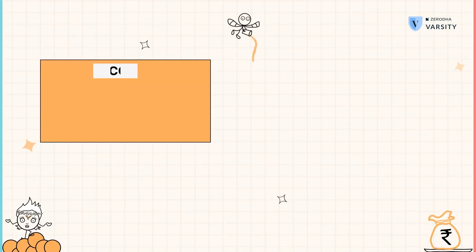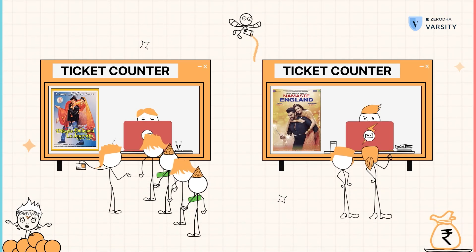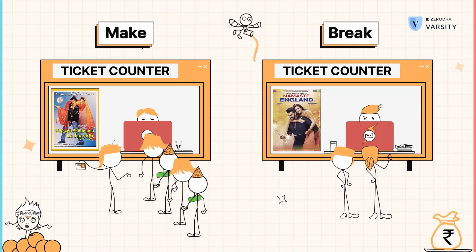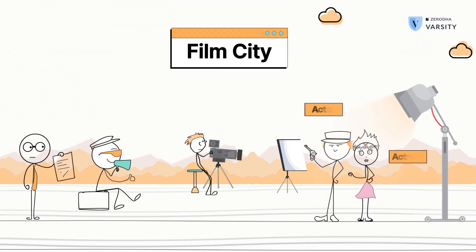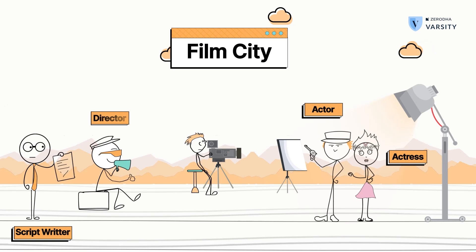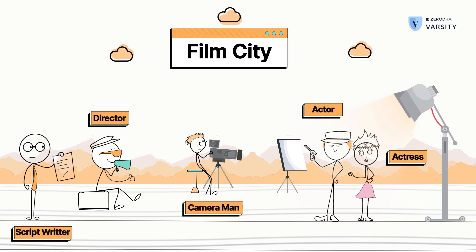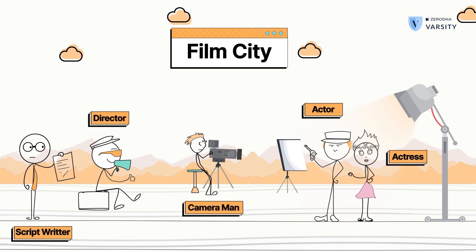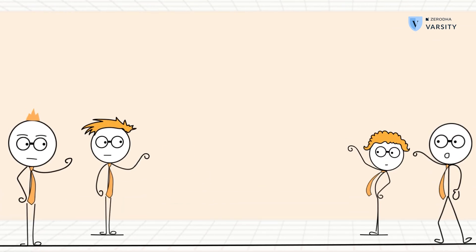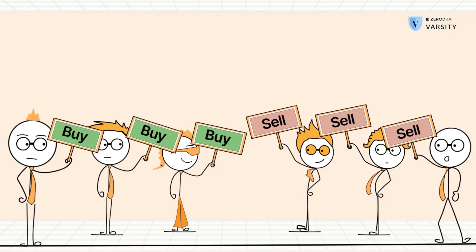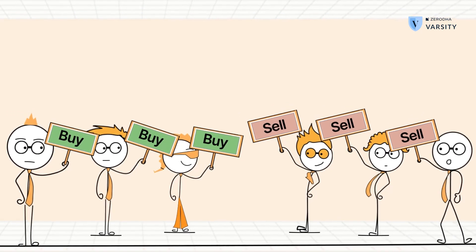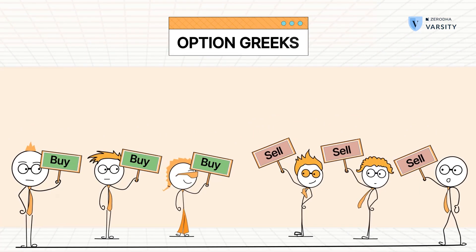Before we do that, take a minute and think about a typical Bollywood movie. What are the factors that you think will make or break a Bollywood movie? Well, the success of a movie really depends on the actors, the technicians, the directors, and all the other various artists involved in the making of a movie. Likewise, in an options trade, irrespective of whether you are a buyer or a seller, the success of the trade depends on several factors. These factors collectively are called the option Greeks.